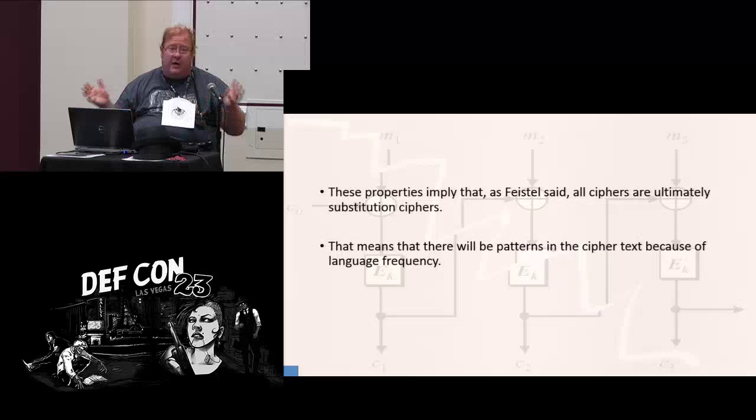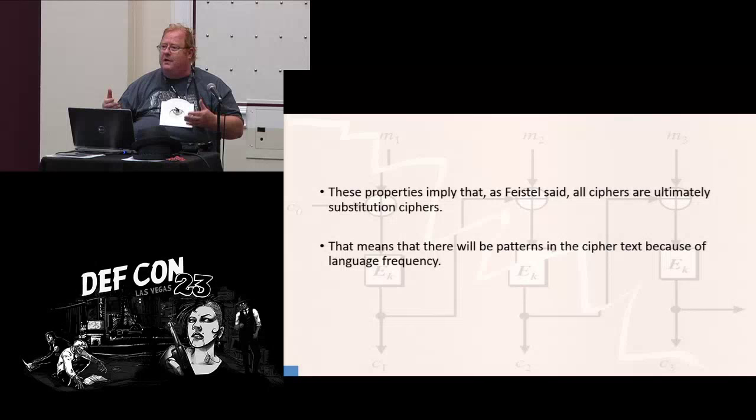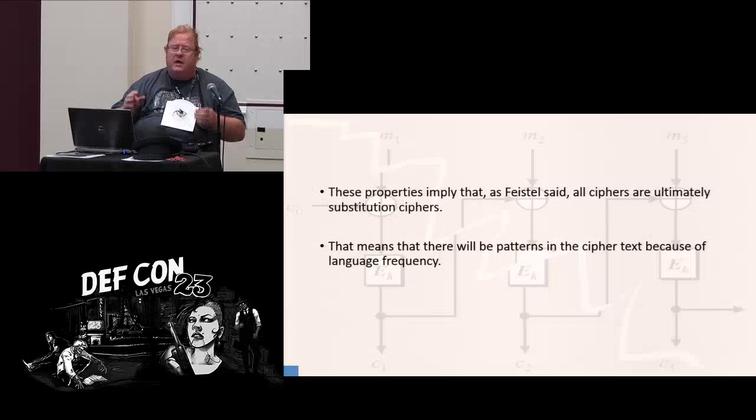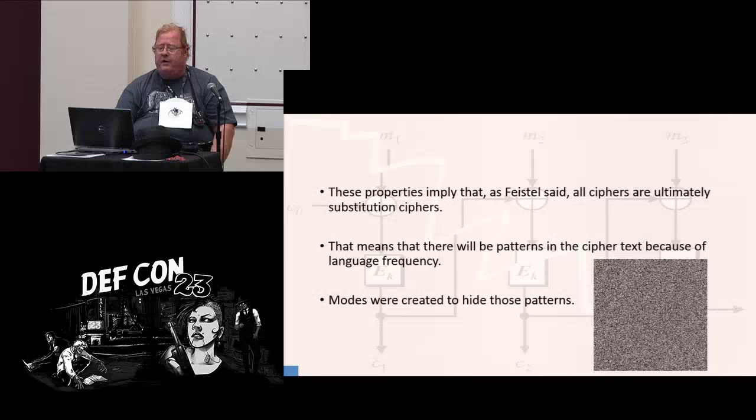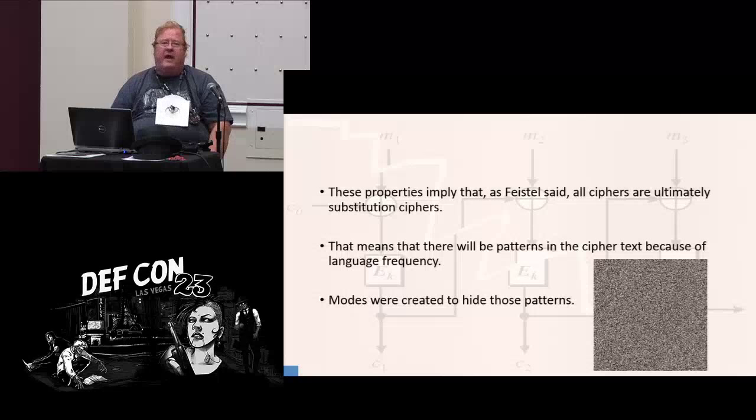If you ask somebody who decrypts, nine times out of ten, you'll get, I need to get the key to that cipher, right? What you really want is the original message back. They need to take use of this substitution cipher property as well. Block ciphers do not hide the patterns. Numerous research shows it doesn't hide the pattern. So if all ciphers are ultimately substitution ciphers, there's patterns.